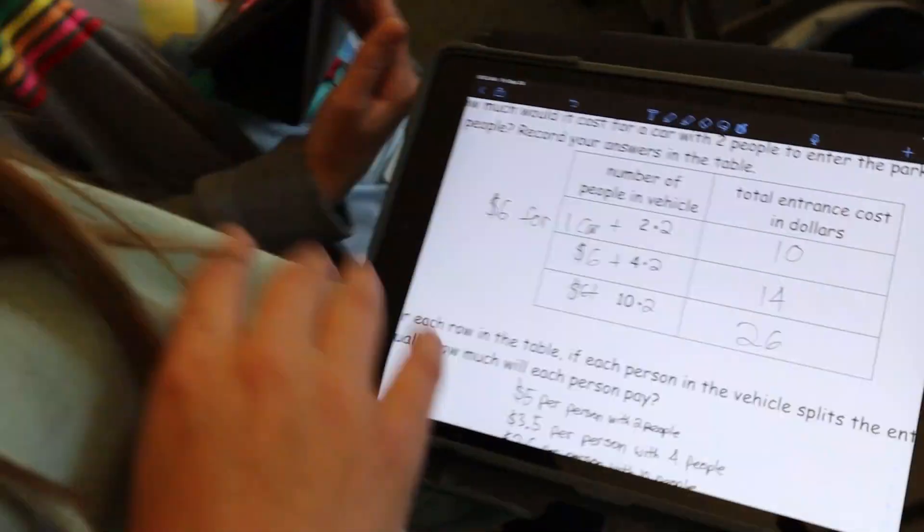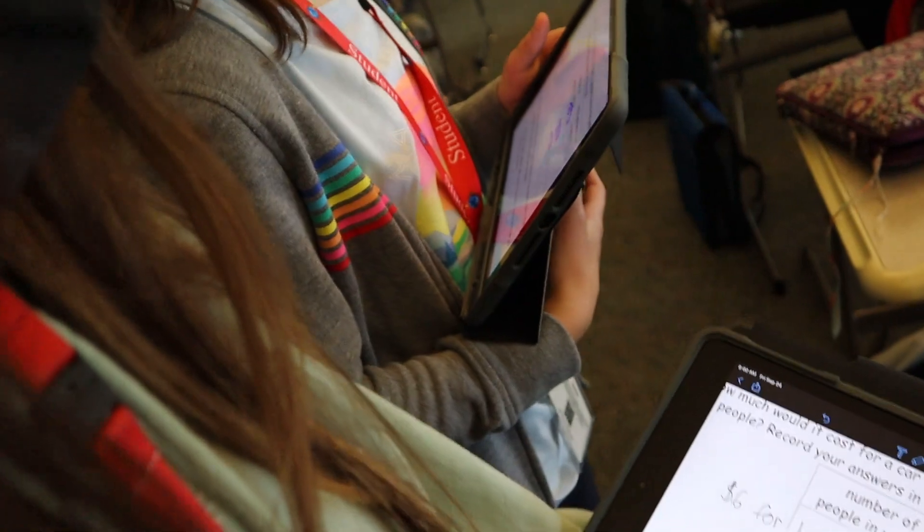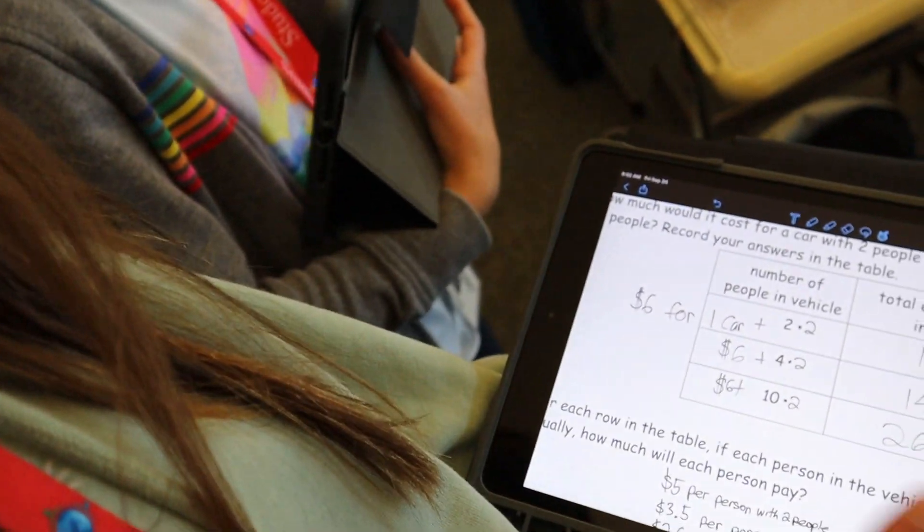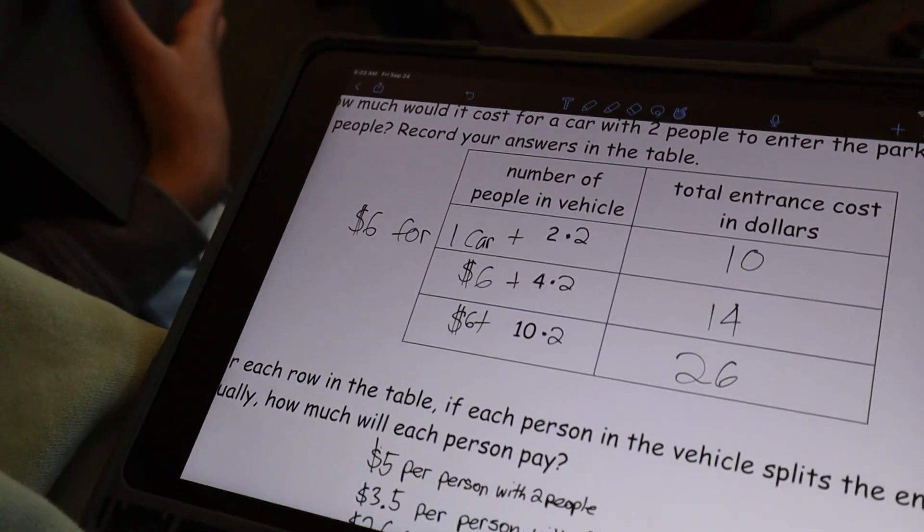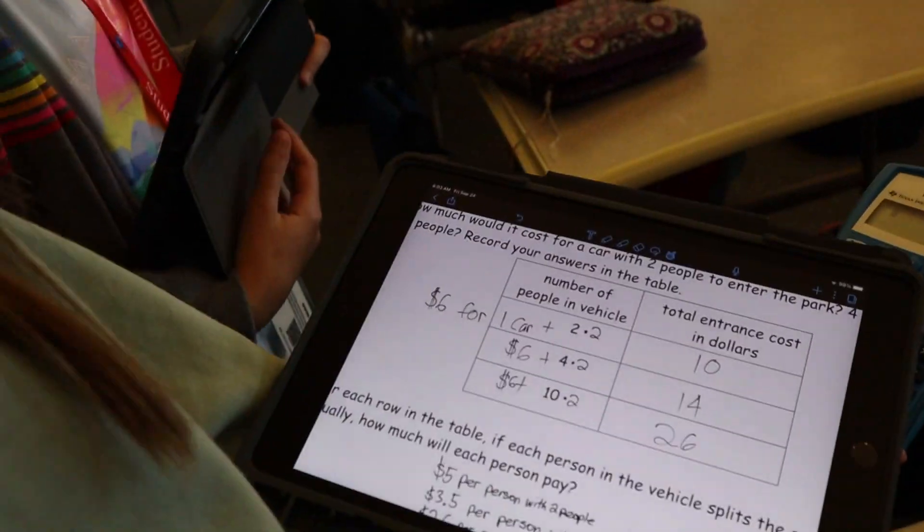Okay, so I thought since there's $6 for each car, I added the $6. And then I multiplied it by two because that's how much each person is for one person. Okay, can you repeat that one more time?